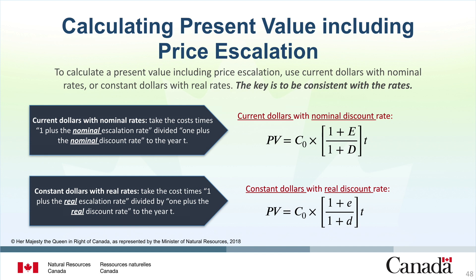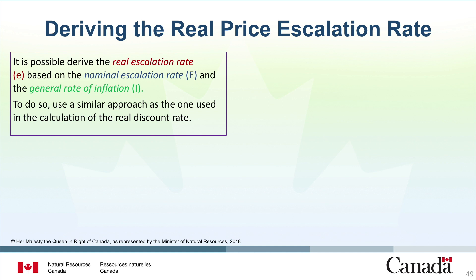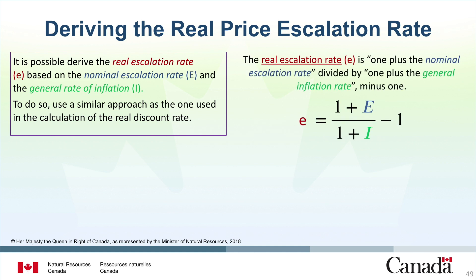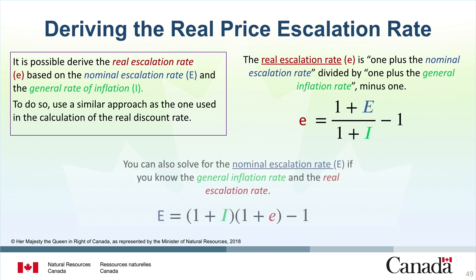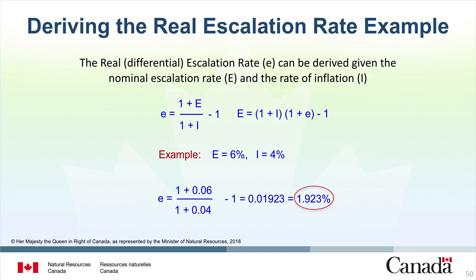It is possible to derive the real escalation rate based on the nominal escalation rate and the general rate of inflation. The real escalation rate is: 1 plus the nominal escalation rate divided by 1 plus the general inflation rate, minus 1. For example, if the nominal escalation rate is 6% and the general inflation rate is 4%, you can enter them into the formula to solve for a real escalation rate of 1.923%.